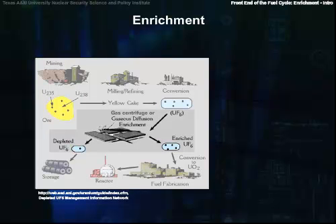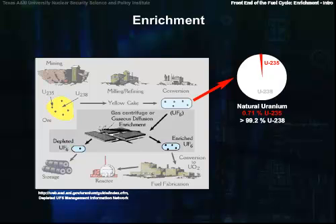The next step in the process is the concentration or enrichment of the uranium-235 isotope. Natural uranium consists primarily of a mixture of two isotopes, and only 0.71% of natural uranium is uranium-235, which is fissile — capable of undergoing fission — the process by which energy is produced in a nuclear power reactor.